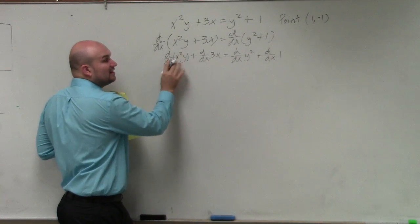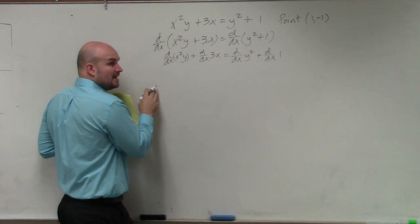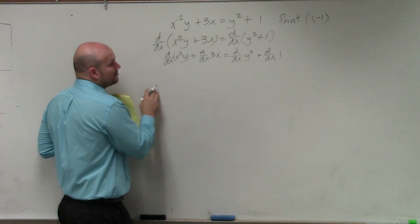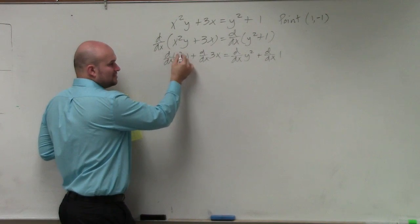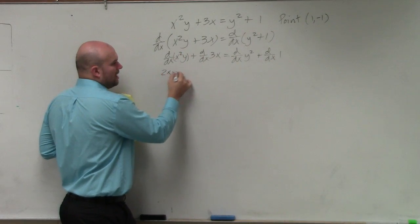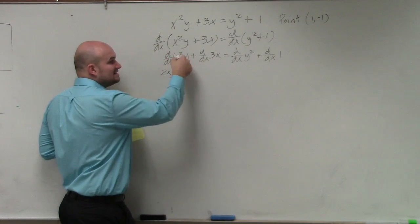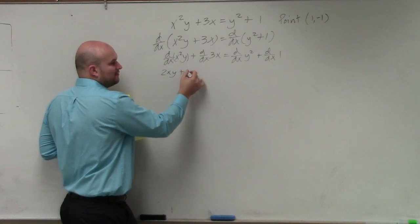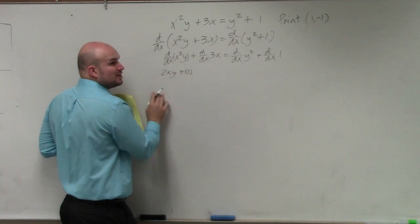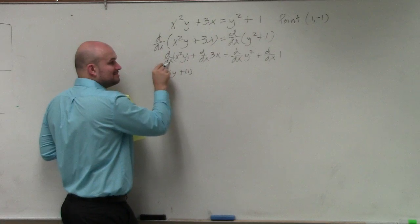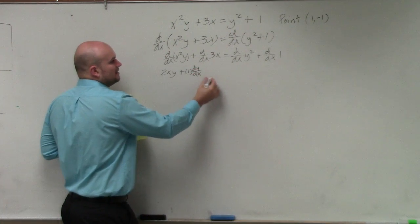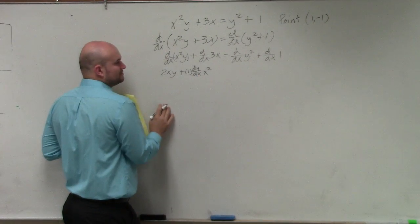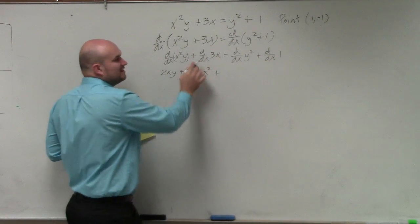when I'm taking the derivative here, I have to use the product rule. So we have 2xy plus, now I need to take the derivative of y. I can take the derivative of y, which is 1, but I need to make sure I include that I just took the derivative of y with respect to x. So I include a dy/dx, and then that's times x², plus the derivative of 3x.